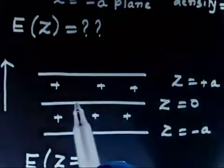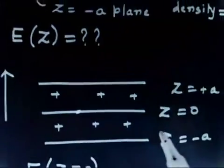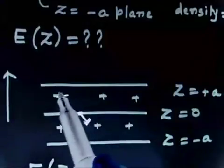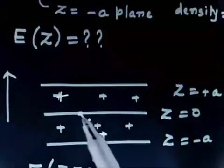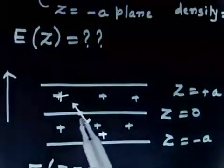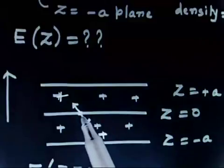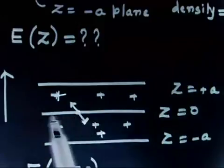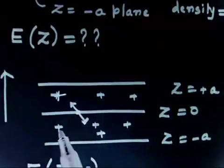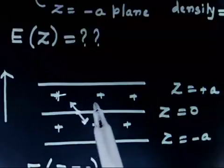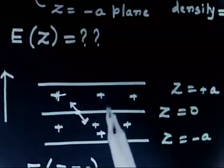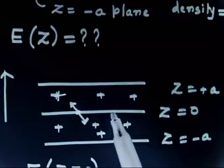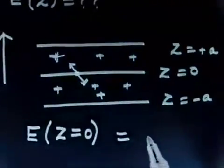If you consider any point on z equals 0, a charge on one side will try to push it in one direction, but symmetrically there is another charge on the other side pushing back. So the total force on this charge is 0, which means the electric field at z equals 0 is 0. For all charges between z = 0 to A, there is a symmetric positive charge from 0 to minus A, so electric field at z = 0 is 0.